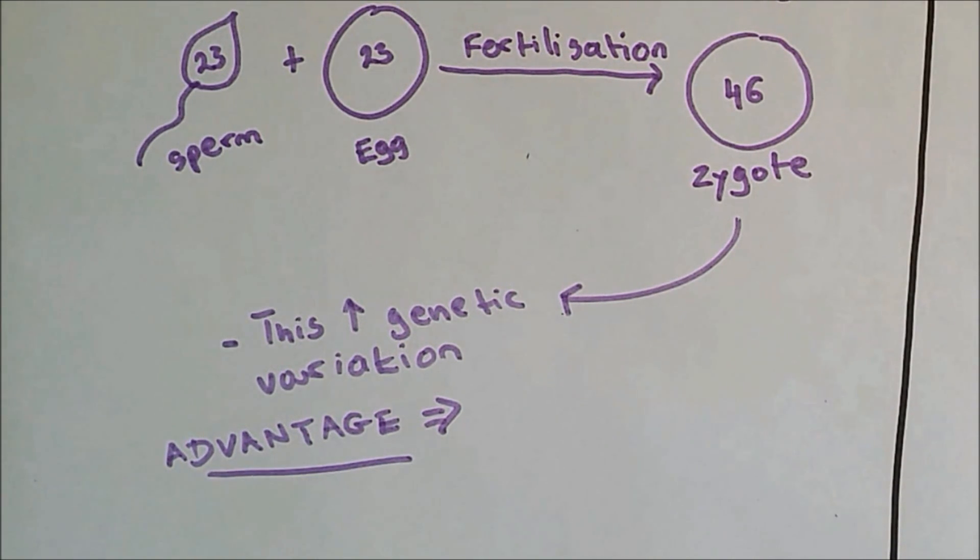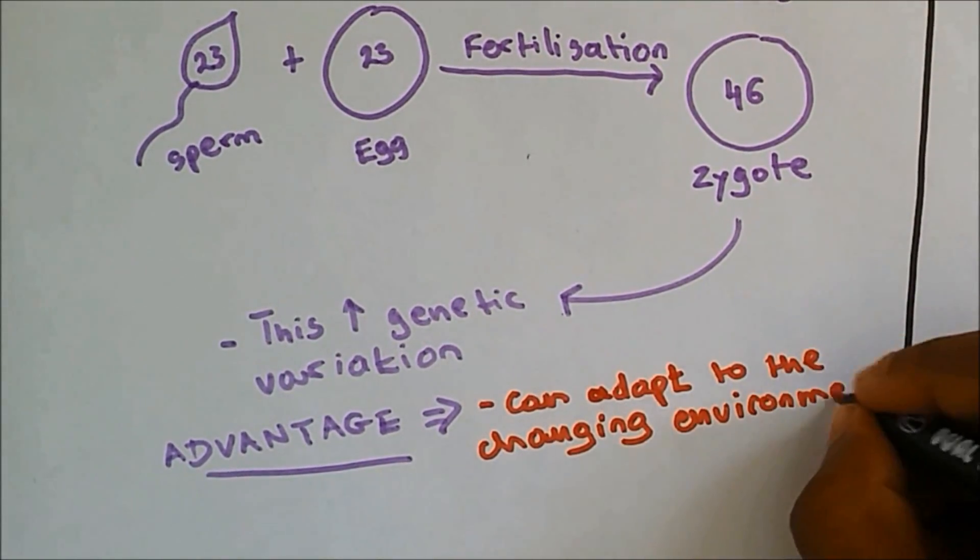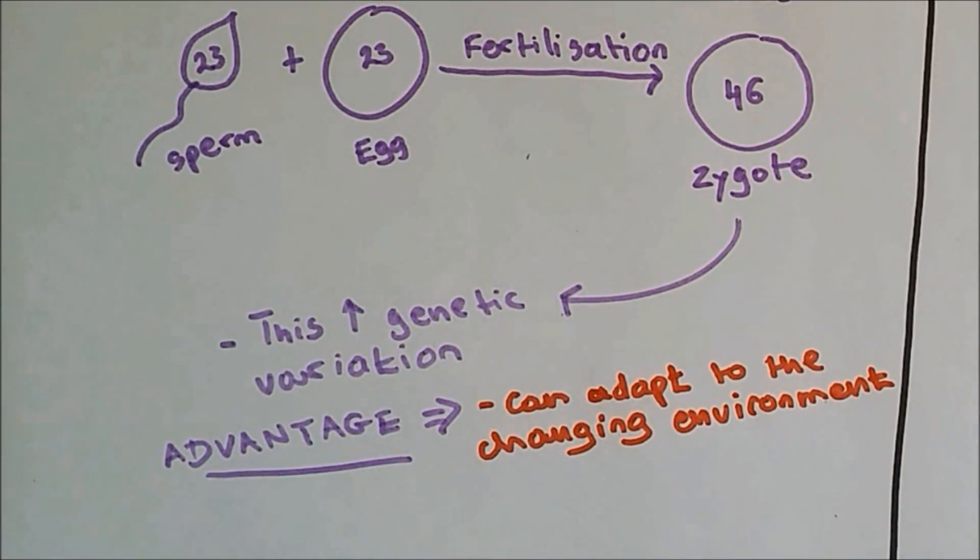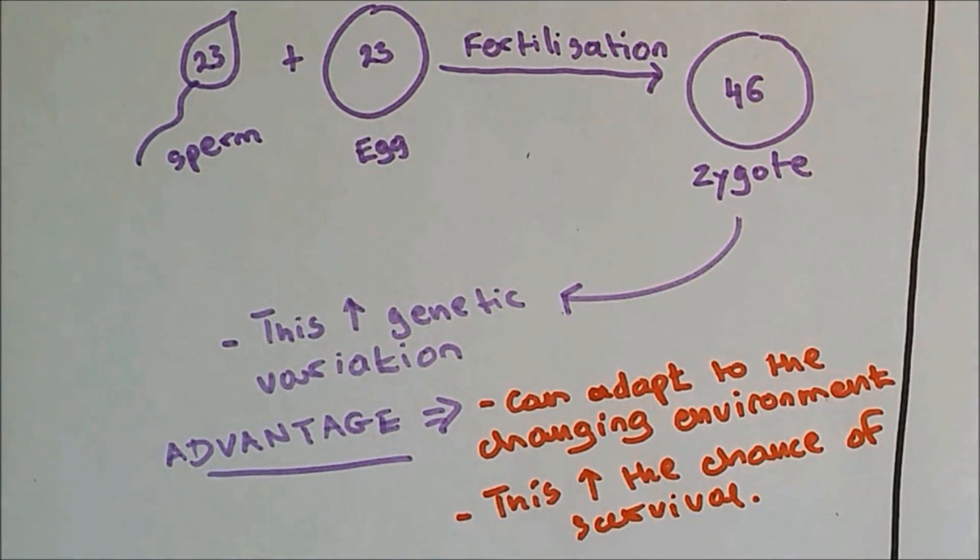Now why is it important to increase genetic variation and why is such a process an advantage? If genetic variation is increased, then the species can adapt to the changing environment. If a species can adapt to a changing environment, then this increases their chance of survival. If an organism can survive, then it can pass its genes to the next generation, and so such populations will increase and have less chance of becoming extinct.